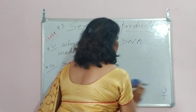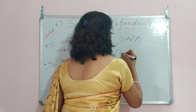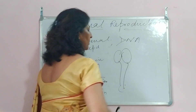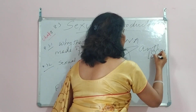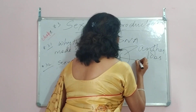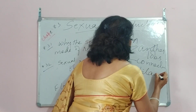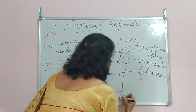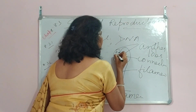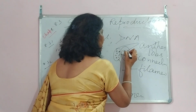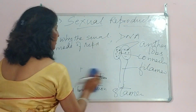When we talk about the stamen — these two are the anther lobes. This is the connective and this is the filament. So this is normally a stamen, the male reproductive part of a flower. This has pollen grains in it. This is the male part of the flower.